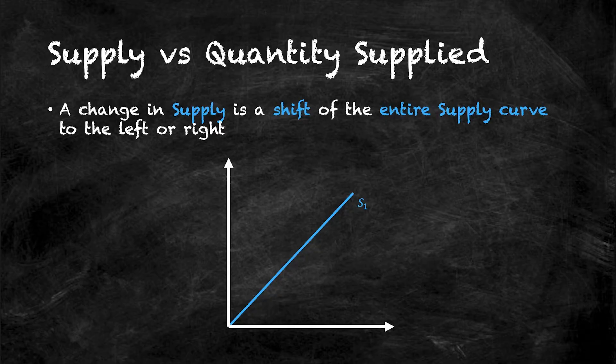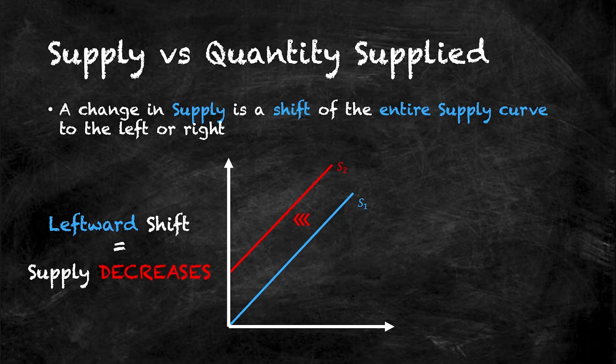A leftward shift of the entire S1 curve means that supply decreases. That is, supply falls from S1 to S2.